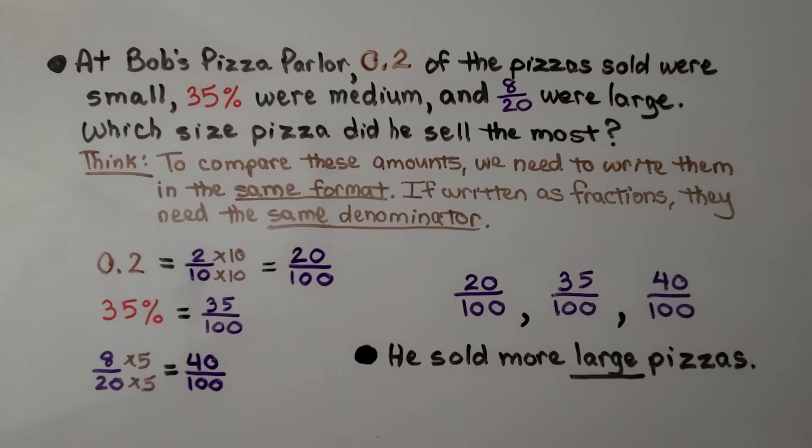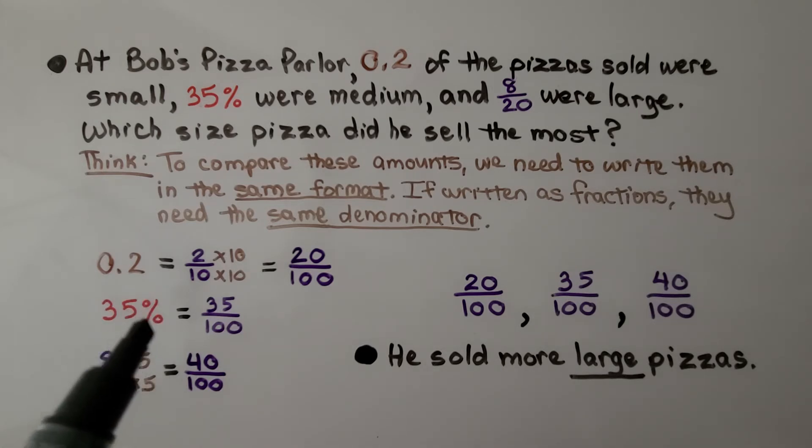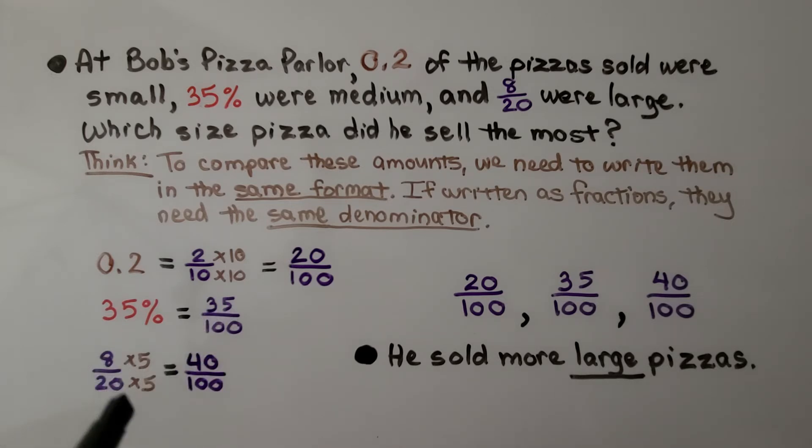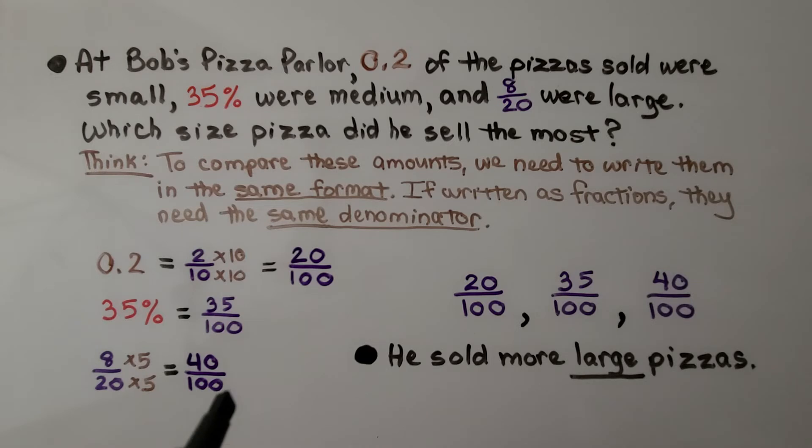Two-tenths, we multiply the numerator and denominator by ten and get twenty-hundredths. Thirty-five percent, we just remove the percent sign and write it over 100. For eight-twentieths, we multiply by five and get forty-hundredths. Now we can easily compare them because they are all fractions with the same denominator.